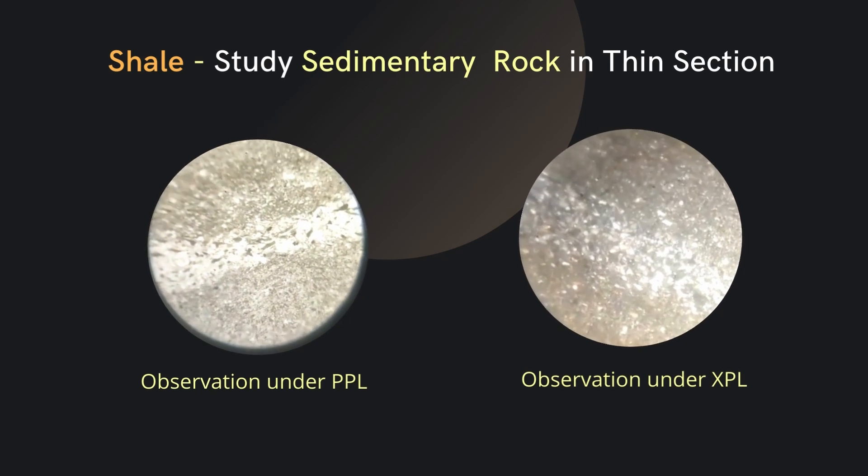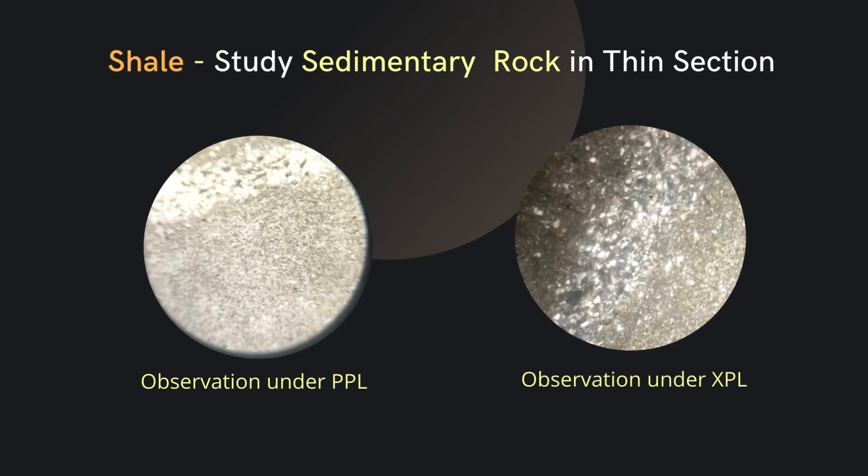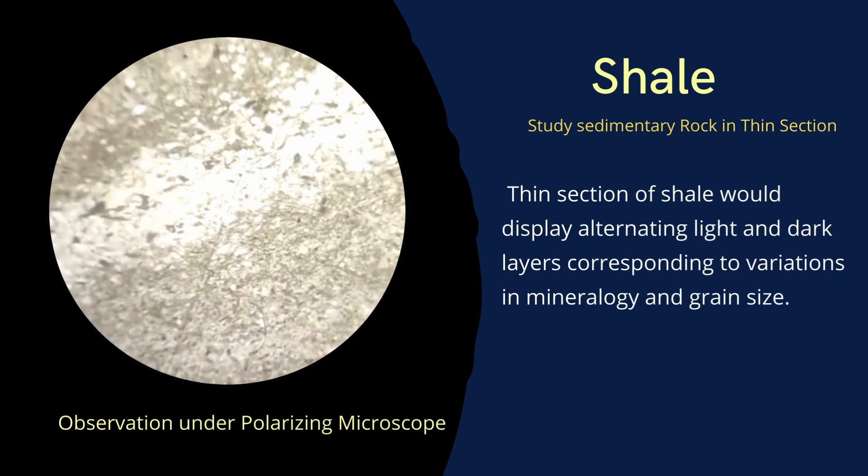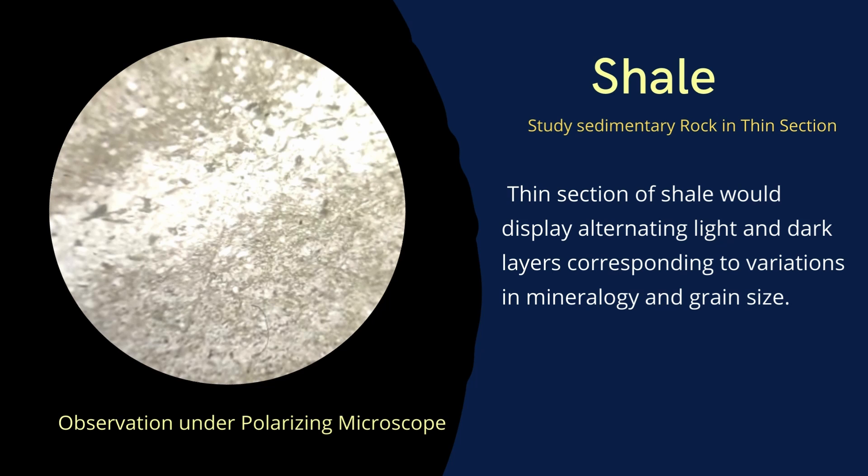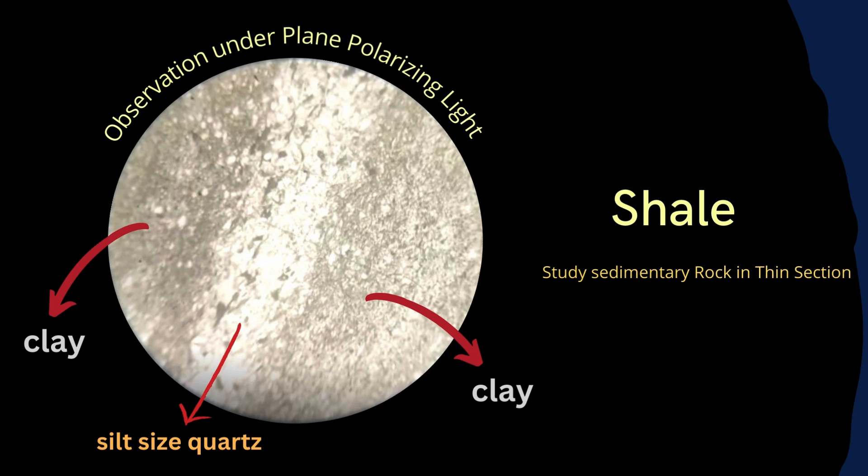Let's observe the thin section of shale under the microscope. Here you can see both in PPL and XPL. Thin section of shale would display alternating light and dark layers corresponding to the variation in mineralogy and grain size.